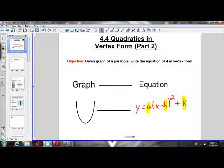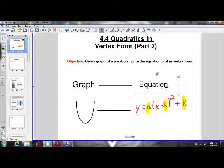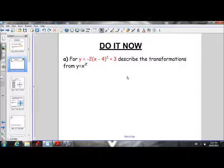The whole idea of today: we want to be able to, if we see the graph, write the equation. Before we do that, let's do one quick review example of going from the equation to the graph. This is like the questions we did on the previous lesson. If I give you the equation y equals negative 2(x minus 4) squared plus 3, describe the transformations from y equals x squared. How has the parabola changed compared to our most basic parabola, y equals x squared?